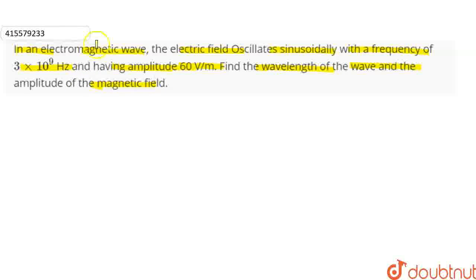Here we have an electromagnetic wave. The electric field wave vector oscillates sinusoidally with a frequency. The frequency is given: ν = 3×10⁹ Hz, and the amplitude of the electric field wave vector magnitude is given: E₀ = 60 V/m.